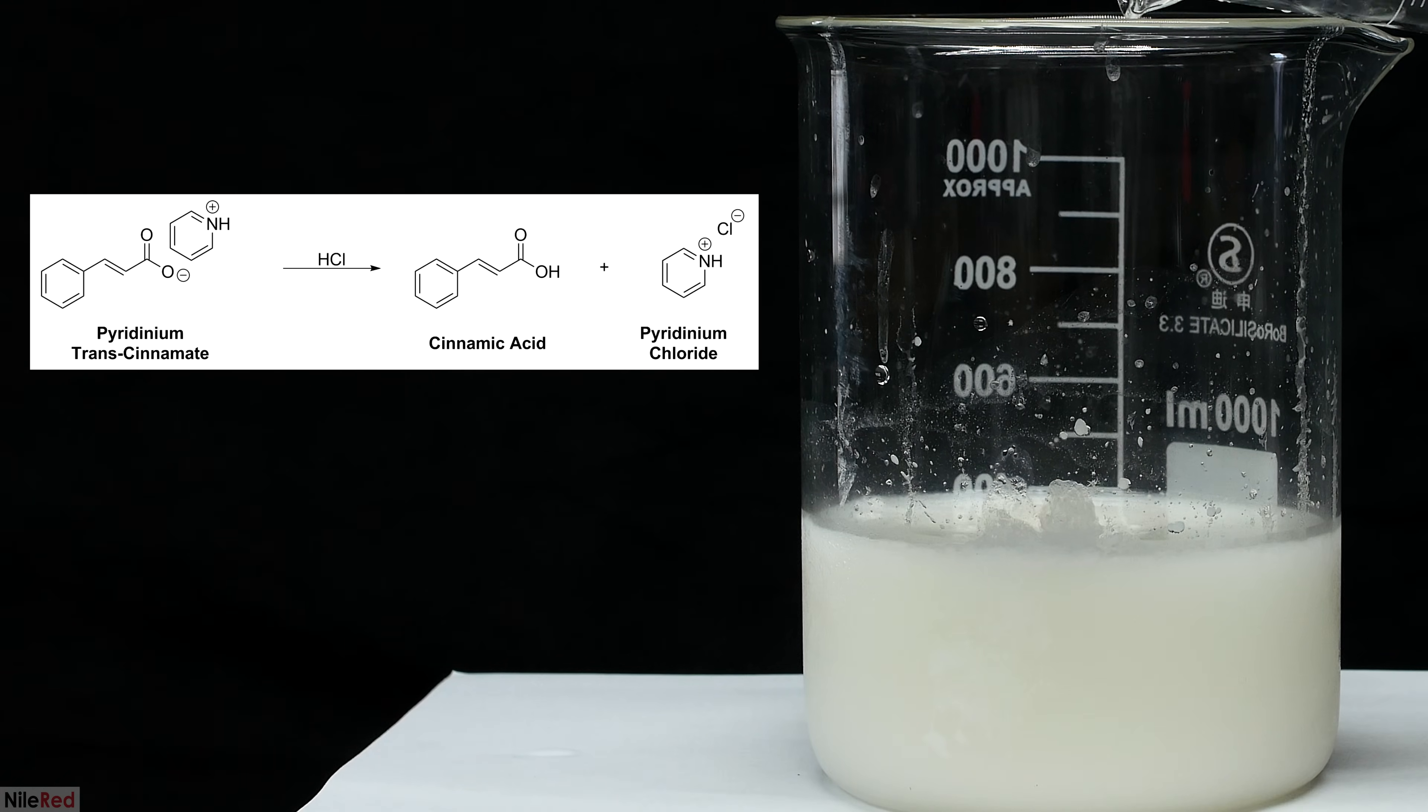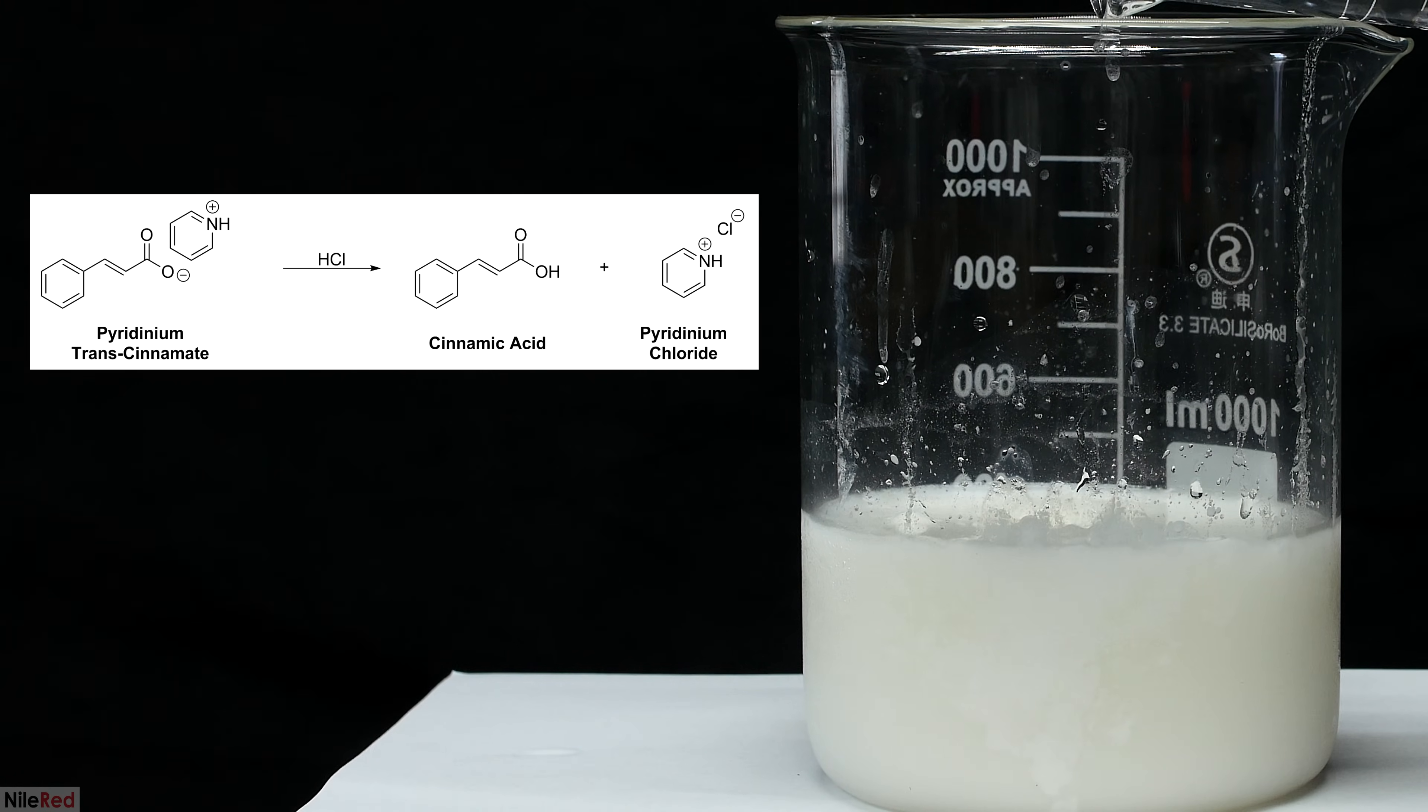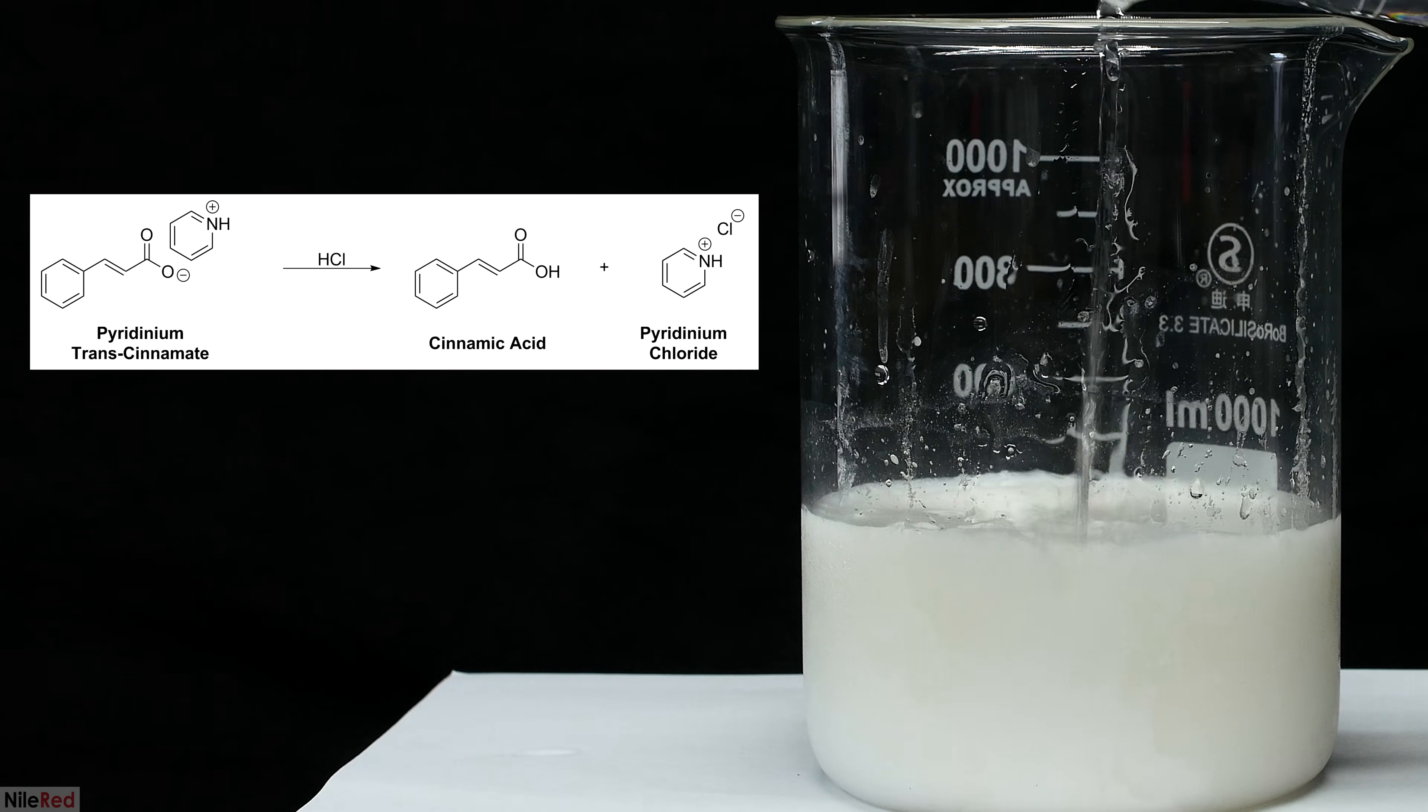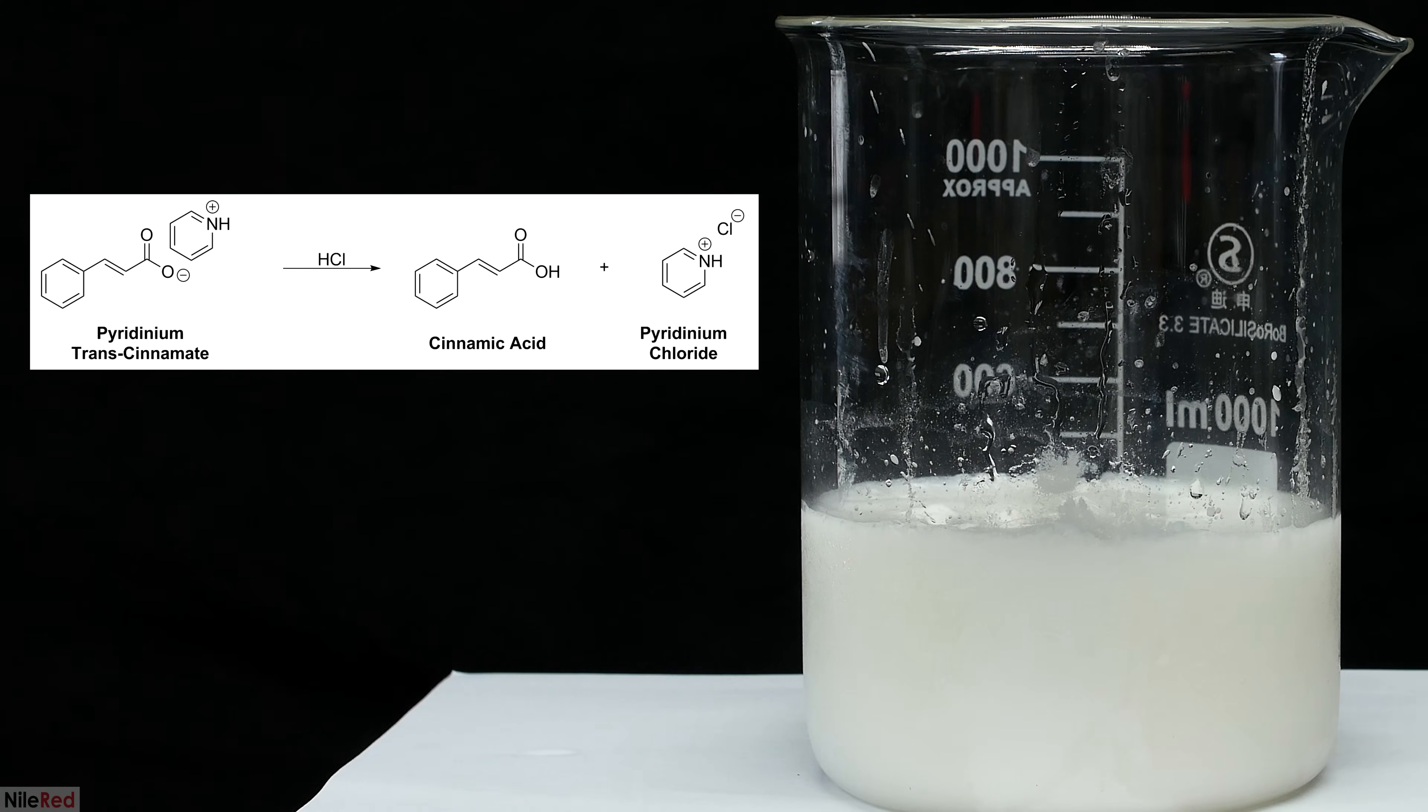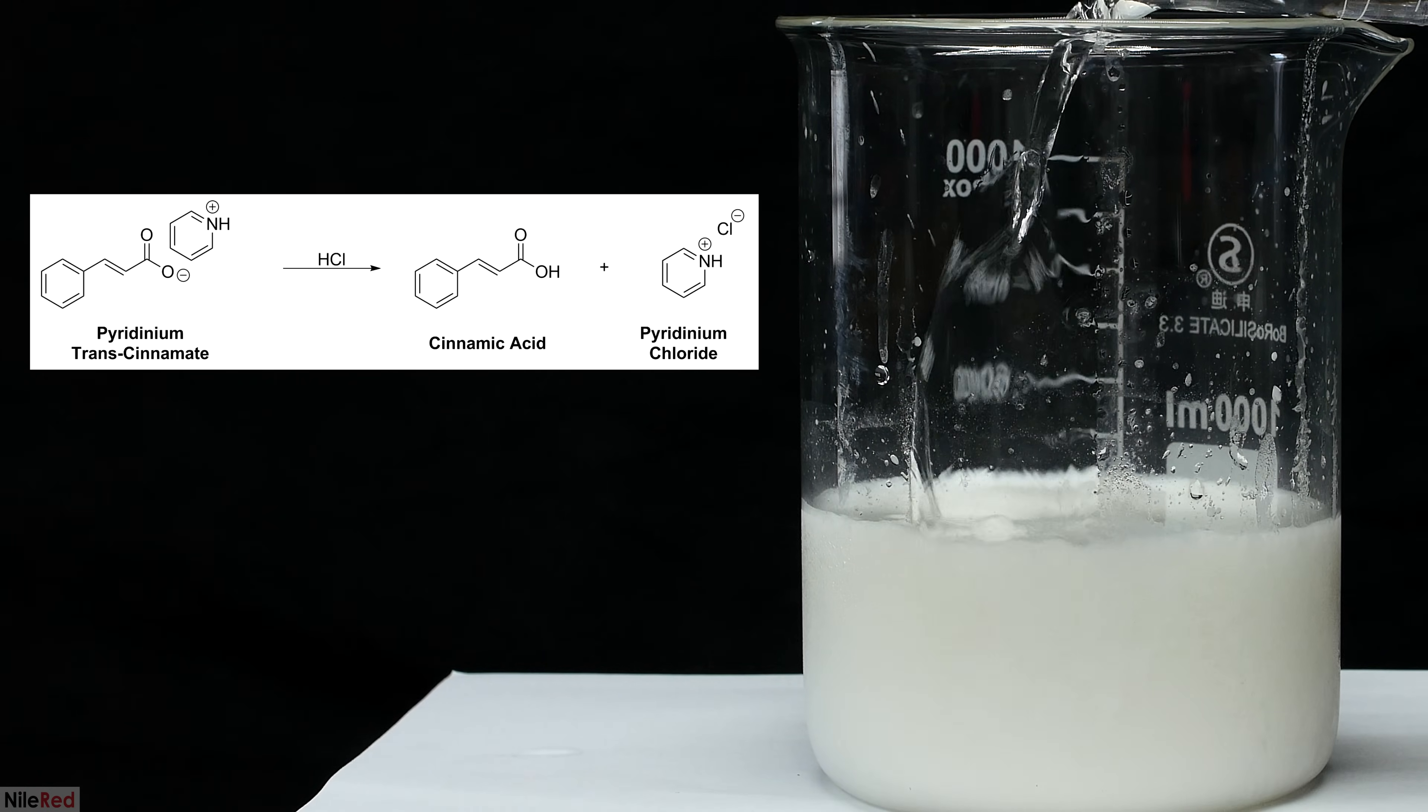The reaction that's occurring here is pretty simple, and we're just regenerating cinnamic acid from its salt form. The hydrochloric acid is a much stronger acid than both cinnamic acid and the pyridinium cation, so it's able to keep both protonated. The pyridinium salt is soluble in water so it dissolves into solution, but the cinnamic acid is practically insoluble so it precipitates out. The hydrochloric acid that's added will also react with the pyridine solvent to make more pyridinium chloride.